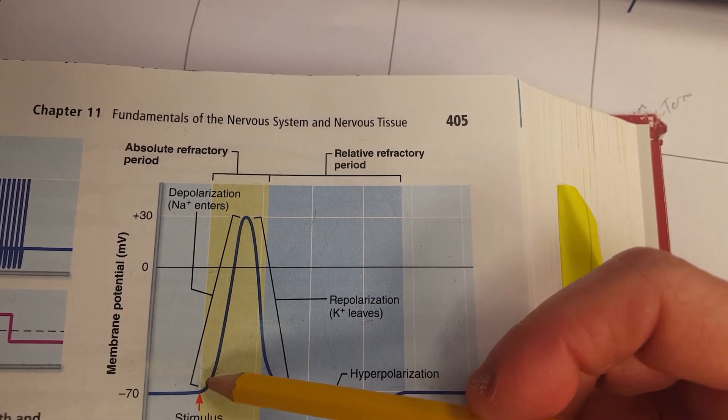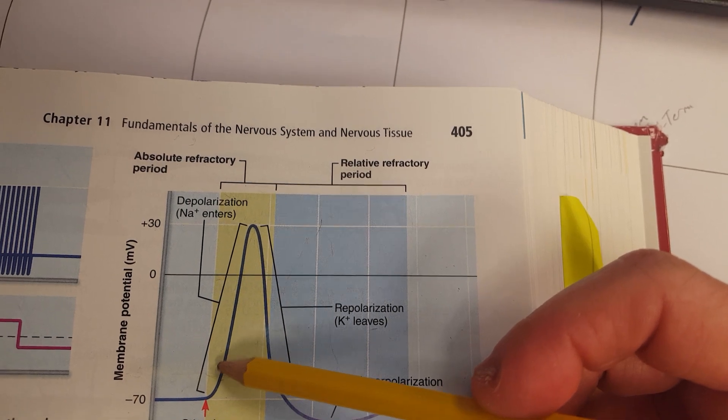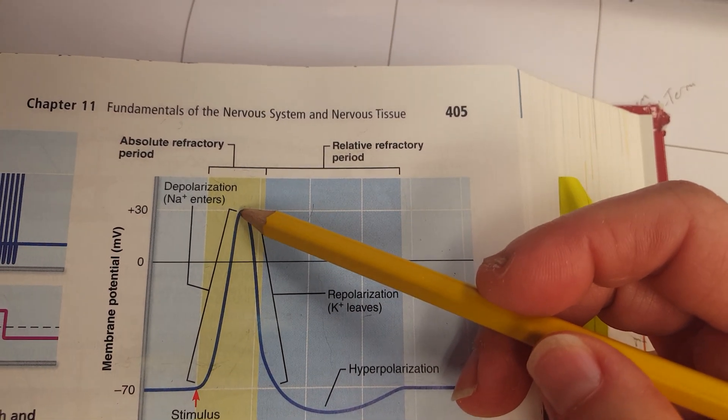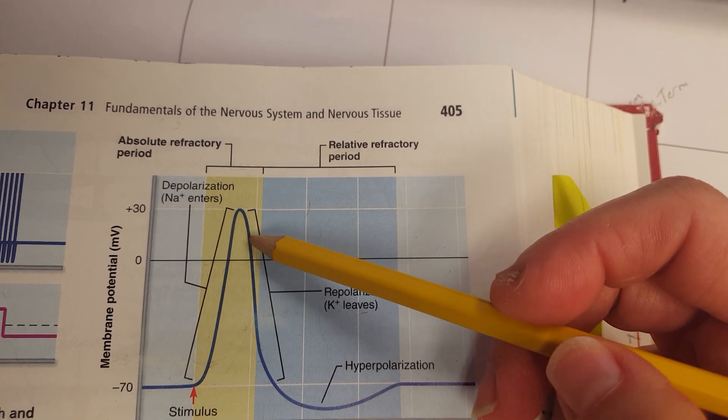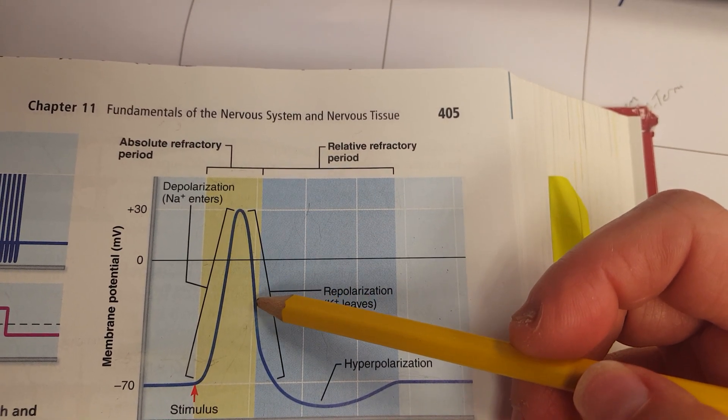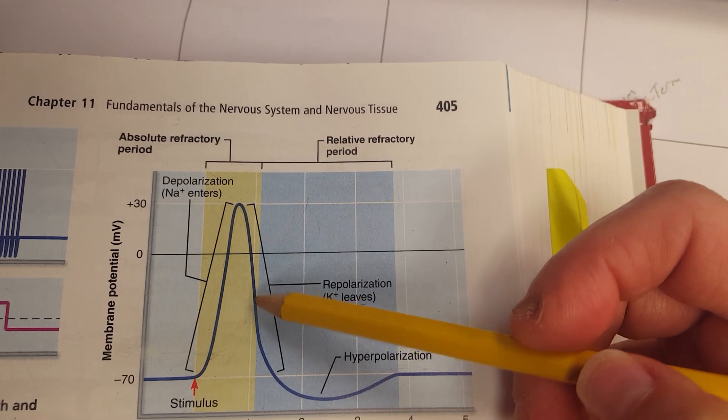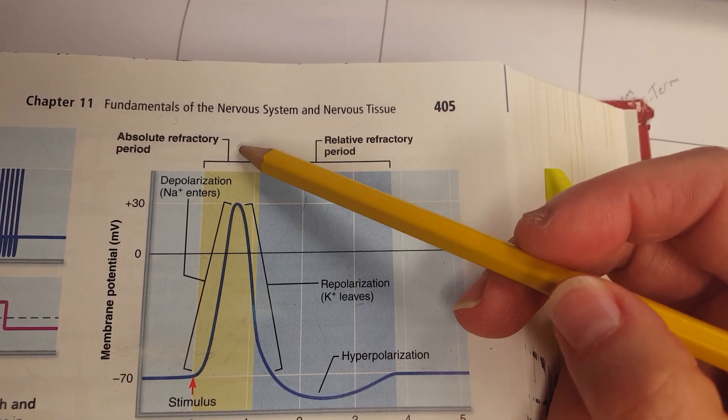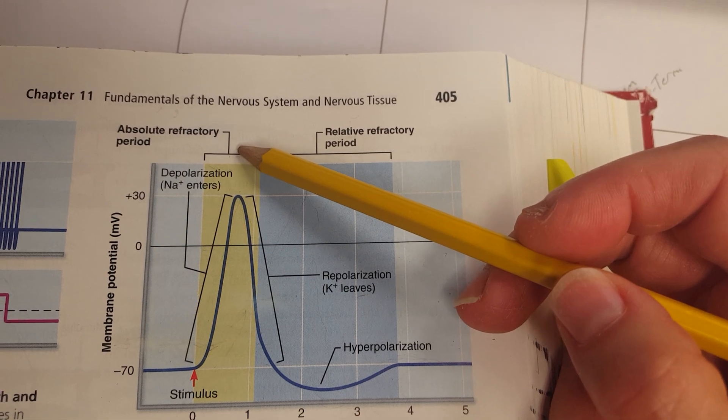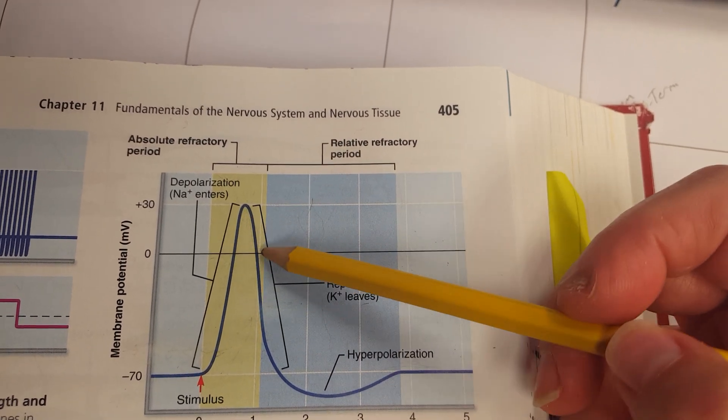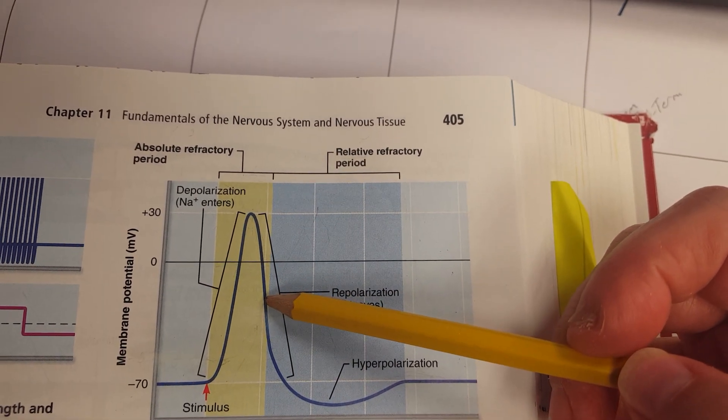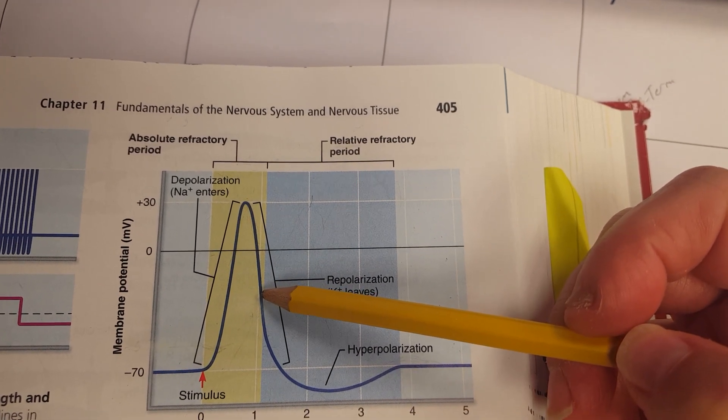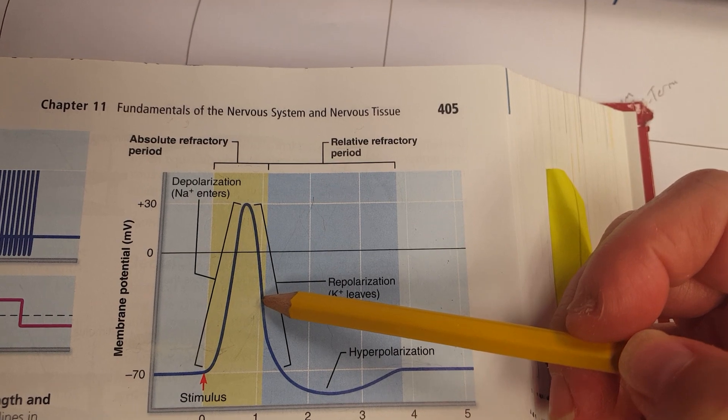During that time from when we hit threshold to depolarizing all the way to positive 30 millivolts, and then as the membrane starts to repolarize, during this period of time that is referred to as the absolute refractory period, because during this time the membrane cannot be stimulated to go through another action potential event.